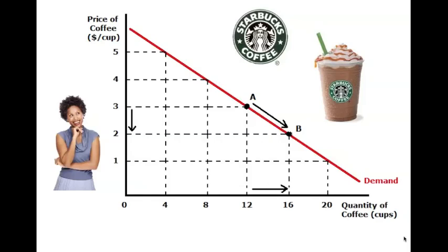Today's lesson is going to be on shifts of the demand curve. The demand curve, which we looked at in the last video, was a reflection of the demand schedule. Both the demand schedule and the demand curve showed us the law of demand: when prices are high, people buy less; when prices are low, people buy more.